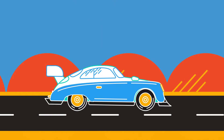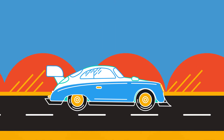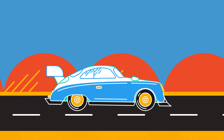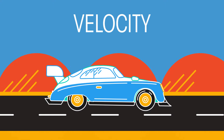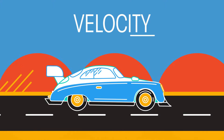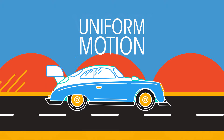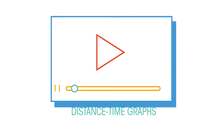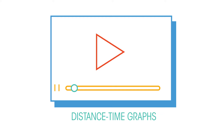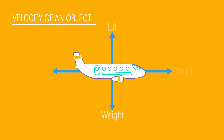You should already know what we mean when we say an object has a velocity and what we mean when we say an object has uniform motion. If not, you may want to check out this video first. In this video we're going to look at how the velocity of an object depends upon the forces acting on it.